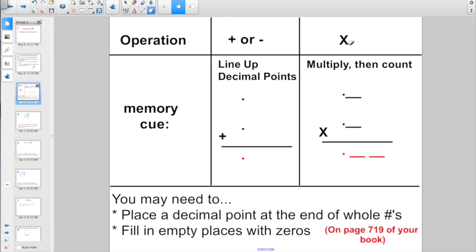The operation when you multiply, your memory cue is to multiply and then count. If I have two numbers behind a decimal point in the problem, I need two numbers behind a decimal point in the answer. Because I'm going to move the decimal point over two places. And you also may need to place a decimal point at the end of whole numbers and fill in empty places with zeros. Remember, we do that when we add or subtract decimals.